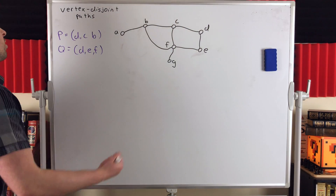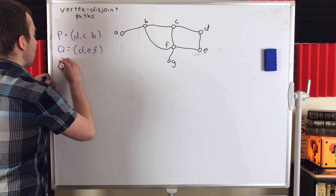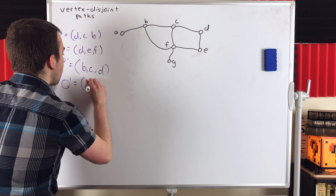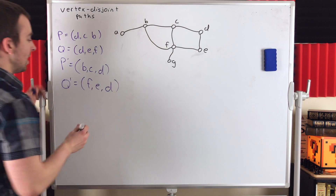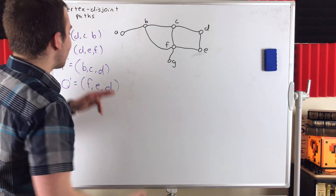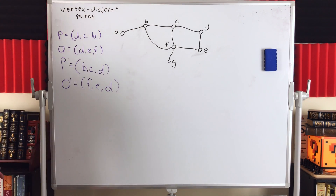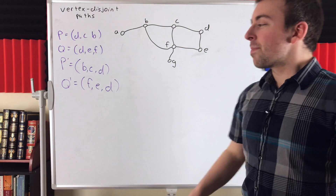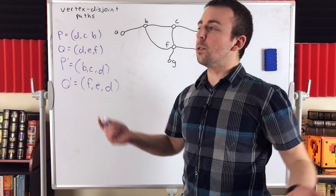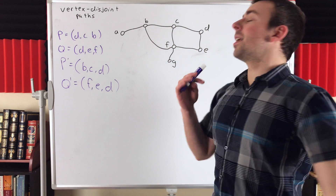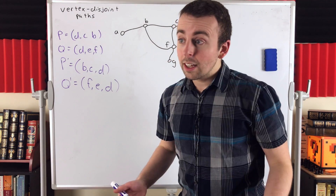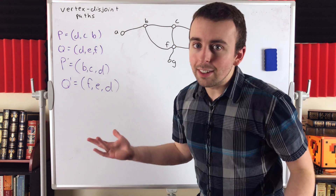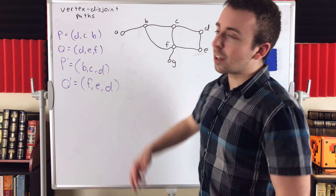Of course, we could also have the reverse situation where we've got a path P' that goes from B to C to D, and a path Q' that goes from F to E to D. These two paths are vertex disjoint, kind of, except for their last vertices. Their last vertices are the same, but besides that, all of their vertices are different. So again, they're not vertex disjoint by the typical easy-to-understand definition we began with, but in some cases it's useful and clear from context to call these disjoint paths — meaning they have no vertices in common except for their starting or ending vertices.